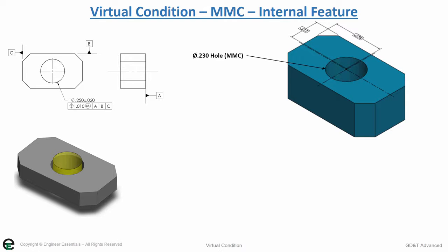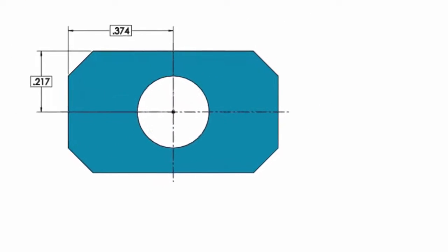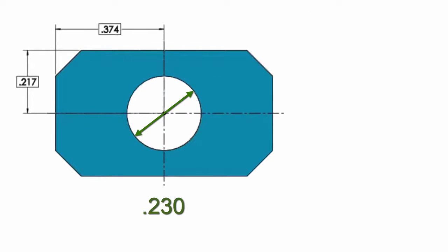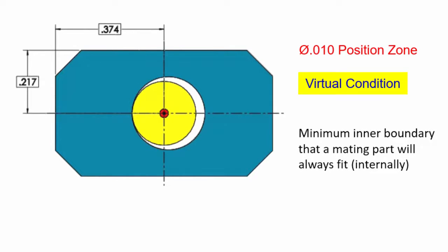The virtual condition is established from the maximum material condition. In this case it's .230 is the max material condition size. We're given .010 position and now our virtual condition is this inner limit that the part can never cross.